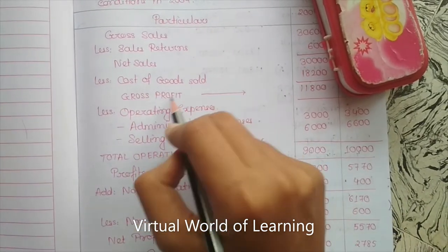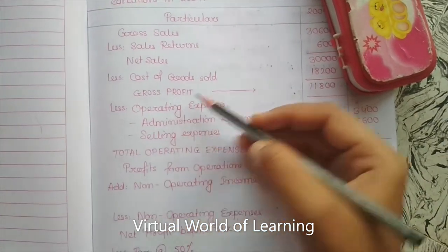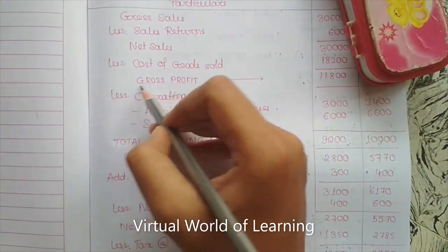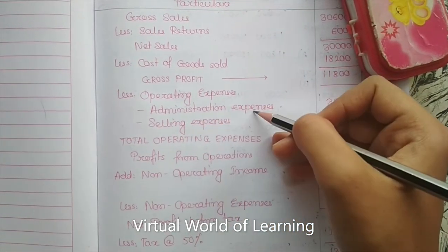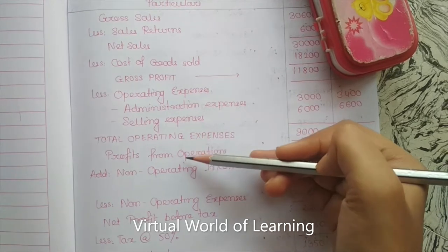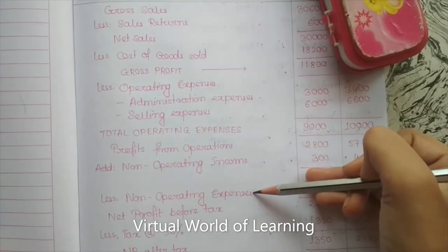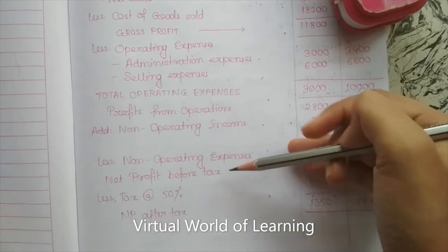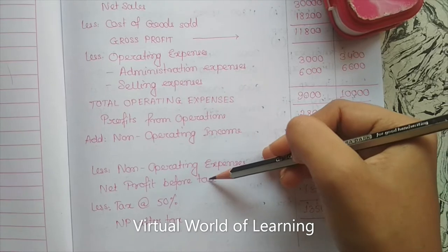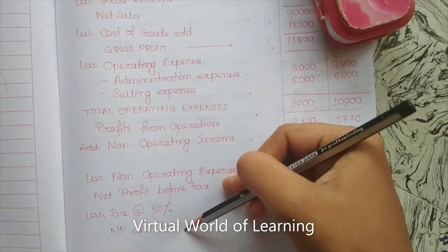Starting from gross sales, less sales returns, we get net sales. From net sales we deduct cost of goods sold to get gross profit. Unlike the P&L account where we deduct all expenses together, here we first deduct operating expenses like administrative expense, selling expense, and others to get total operating expense. From gross profit we deduct total operating expense to get profit from operations, then add non-operating income and deduct non-operating expenses to get net profit before tax.